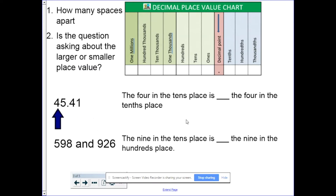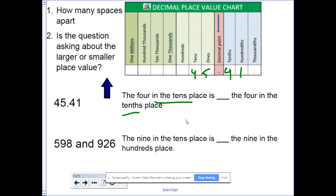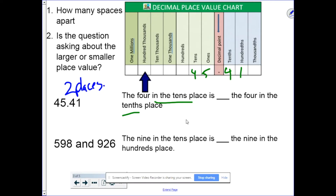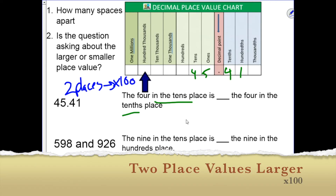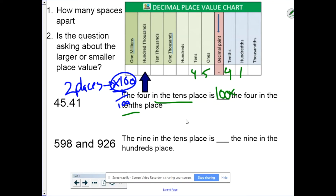Let's look at a couple of examples. We have 45 and 41 hundredths. The 4 in the tens place is blank times the 4 in the tenths place. First thing to note is that we're talking about the tens place, which is larger than the tenths place. Next, how far apart are they? Starting from the tenths place and counting: 1, 2 — so they are two place values apart. Two place values means it's times 100 or 1 hundredth. And since we're talking about the larger one, we go with the larger value. So the 4 in the tens place is 100 times larger than the 4 in the tenths place.